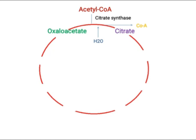If you remember, in pyruvate oxidation, Coenzyme A was added; now that same Coenzyme A is removed in this step. Now citrate, with the help of aconitase enzyme, converts into cis-aconitate. Cis-aconitate is an isomer of citrate. The aconitase enzyme changes the stereochemistry of citrate, converting it into cis-aconitate, and then again changes the stereochemistry of cis-aconitate.